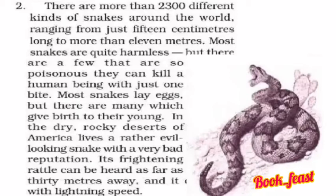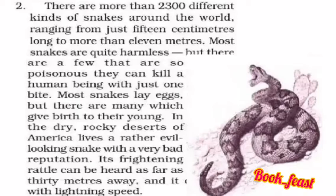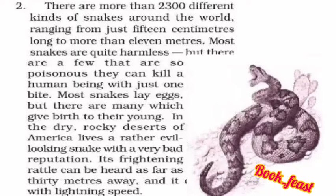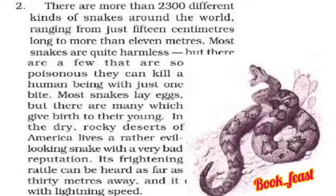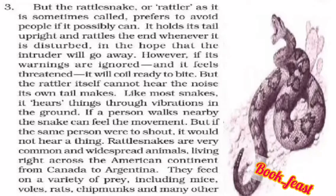This snake lives in very dry and rocky desert conditions. This snake is very scary. It is not easy to detect the snake at 30 meters. It moves at a very light speed — this snake is very fast. The name of this snake is the rattlesnake.